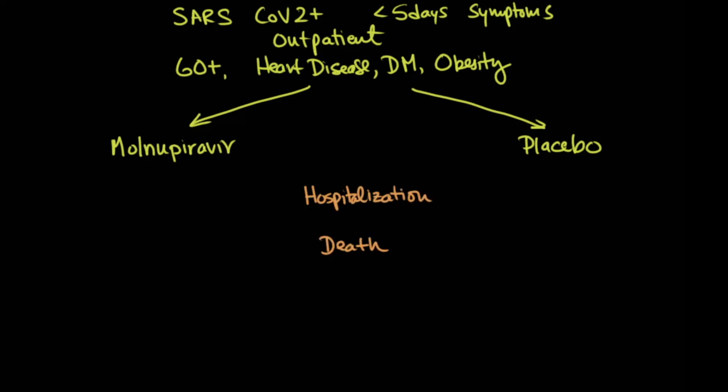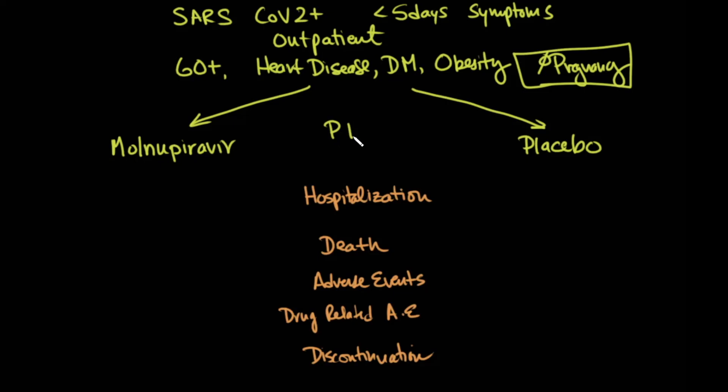They looked at the incidence of any adverse events, the incidence of drug-related adverse events, and also discontinuation of the study drug. Now, just so you're aware, there were no subjects in this study that were pregnant. That was an exclusion criteria. So again, as we mentioned, they stopped the study early, and that's called a planned intervention analysis.